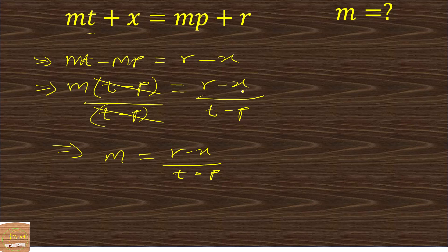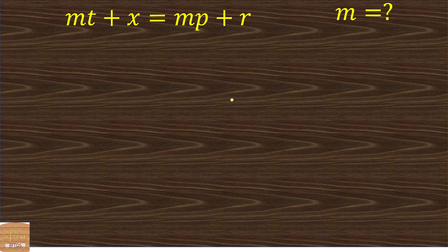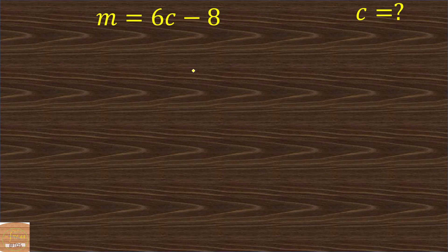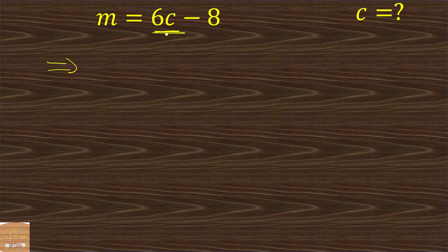That's the second example — it's not difficult, just a matter of taking your time. Next example: m equals 6c minus 8, and we have to make c the subject. We keep 6c on the right and send the minus 8 to the other side, giving m plus 8 equals 6c.